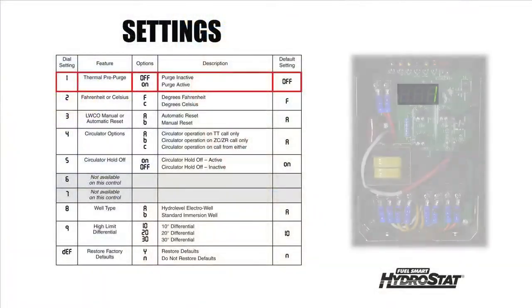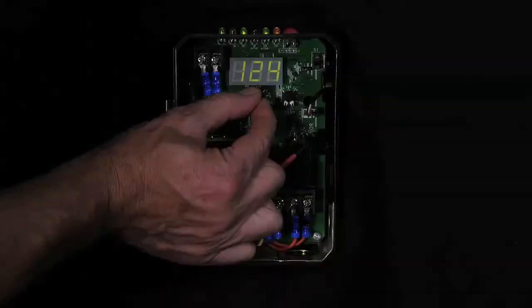The feature includes an internal algorithm that monitors the rate of temperature decrease. If it determines that the latent heat will be unable to satisfy the heat call, or if the boiler water temperature drops below 150 degrees Fahrenheit, the burner will fire immediately. This feature is turned off by default. So let's go ahead and activate this feature.